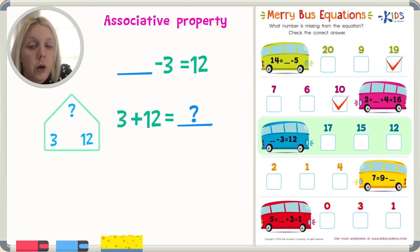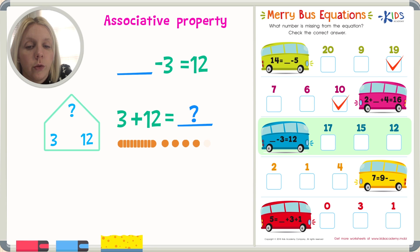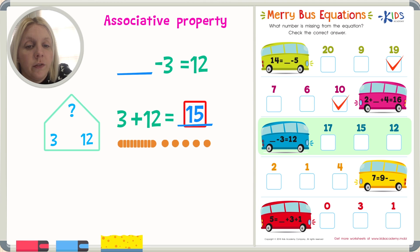That one we can solve. I've got one column of tens and two units of ones, plus three. Adding them all together: ten, eleven, twelve, thirteen, fourteen, fifteen. I believe that the answer is going to be fifteen, but we need to check.